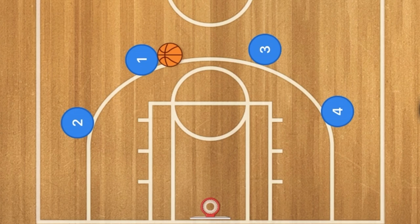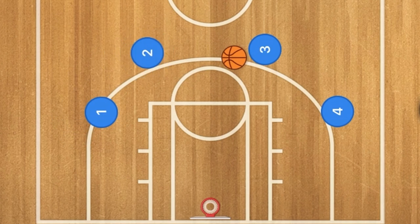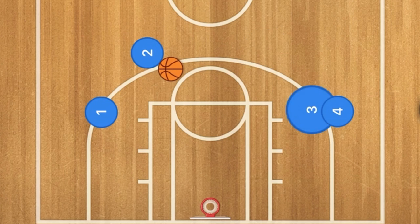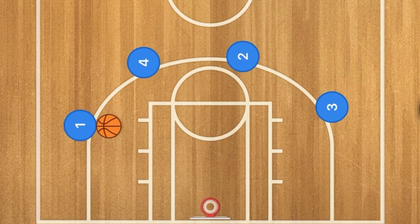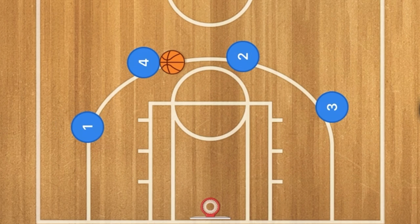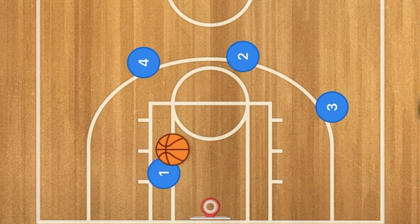First we're going to do pass and screen away — very simple. Player 1 will pass and screen away for that player. For example, if player 1 passes up to player 4, player 1 will then — acting like this is a circle — go around and cut towards the basket, where he may be open for a layup.